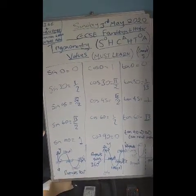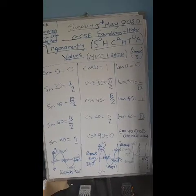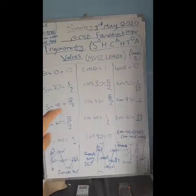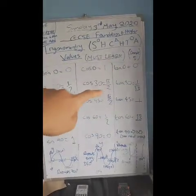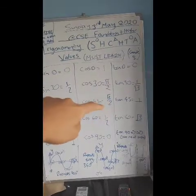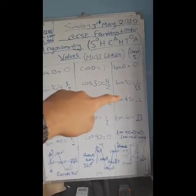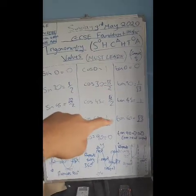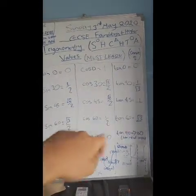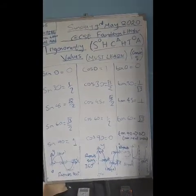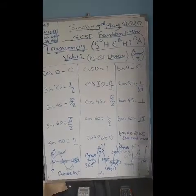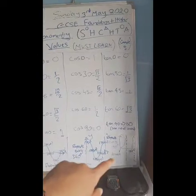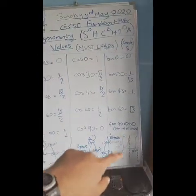Tan of zero is equal to zero. Tan of 30 is 1 over root 3, or root 3 over 3 if you rationalize that. Tan 45 is equal to 1. Tan of 60 is equal to root 3, and then tan of 90 is undefined. That is what the tan graph looks like.